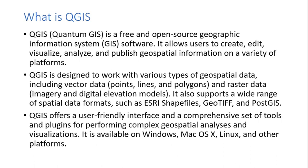These are some of the types of data that QGIS is designed to work with. The first is geospatial vector data, which is basically points, lines, and polygons. The other is raster data, which includes imagery and DEMs — digital elevation models. It also supports a wide range of spatial data formats such as Shapefiles, which is the most common.